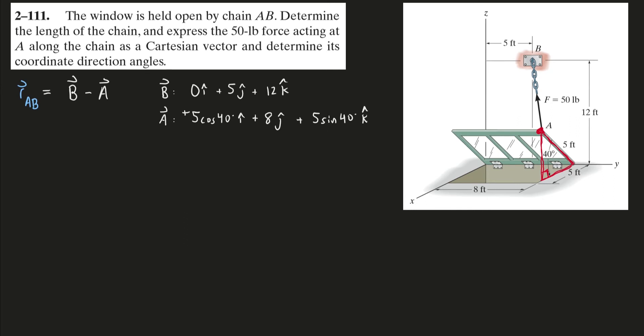So now that we have the coordinates of B and A assembled, we can just do subtraction. We'll do 0 minus 5 cosine 40, 5 minus 8, and et cetera. So once we do that math, we'll get our position vector from A to B, which again is this vector right here in blue.